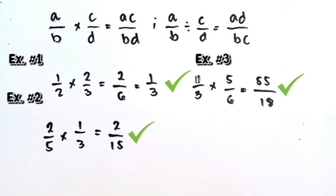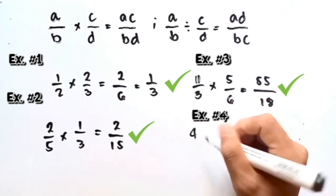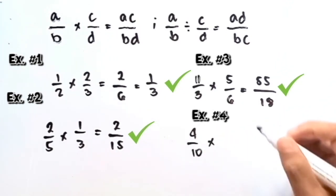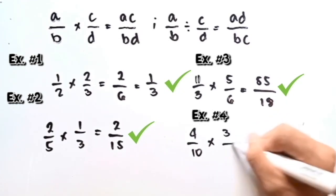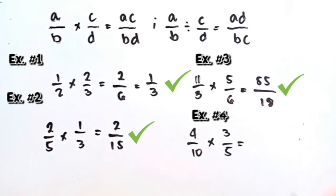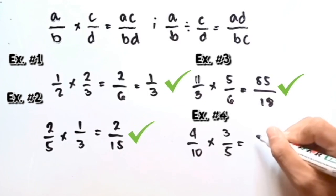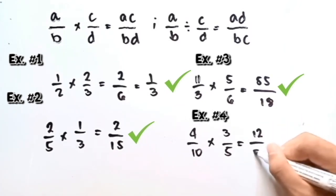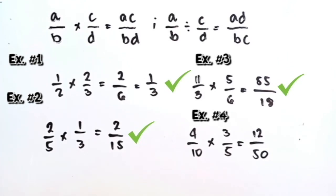Let's proceed to the last example. If we're going to multiply 4 over 10 times 3 fifths, just multiply the numerator and the denominator. So 4 times 3 is 12, and 10 times 5 is 50. So 12 over 50 is the answer.